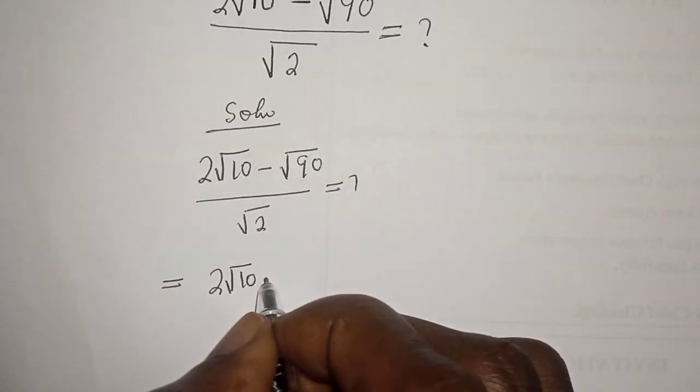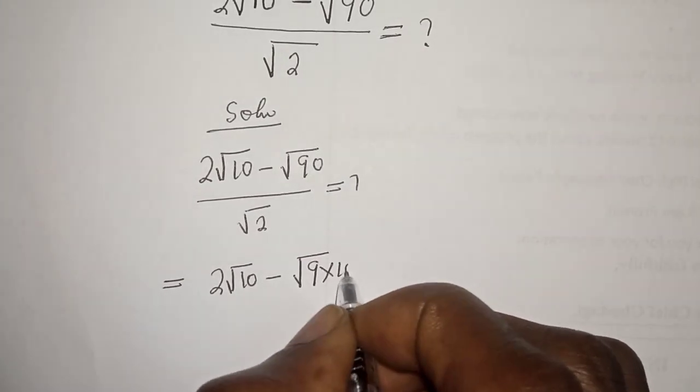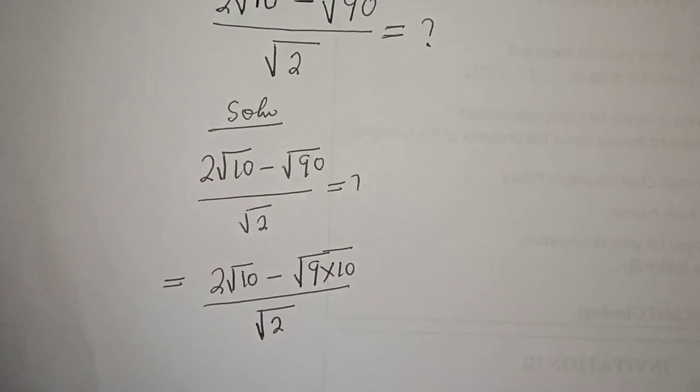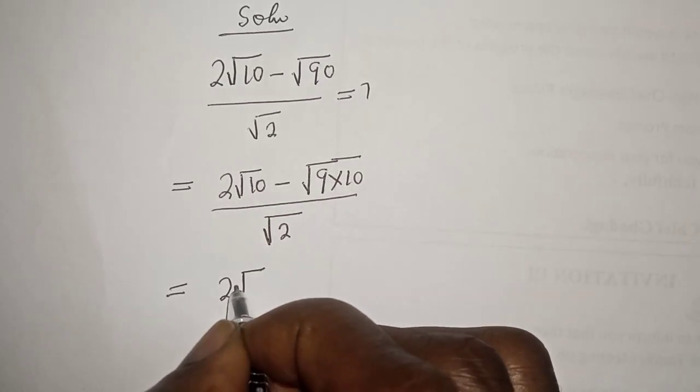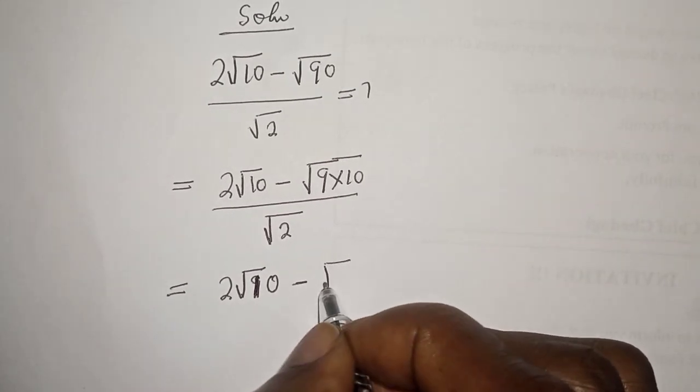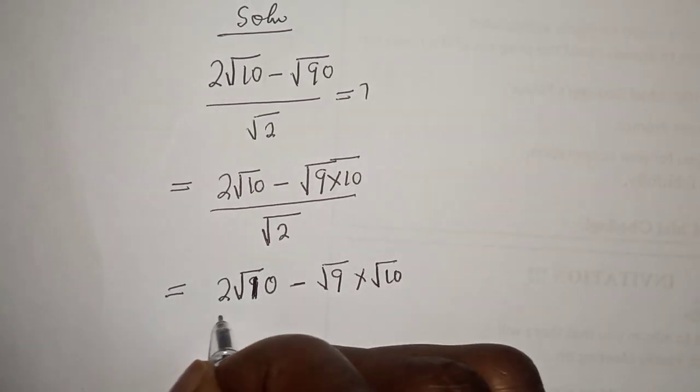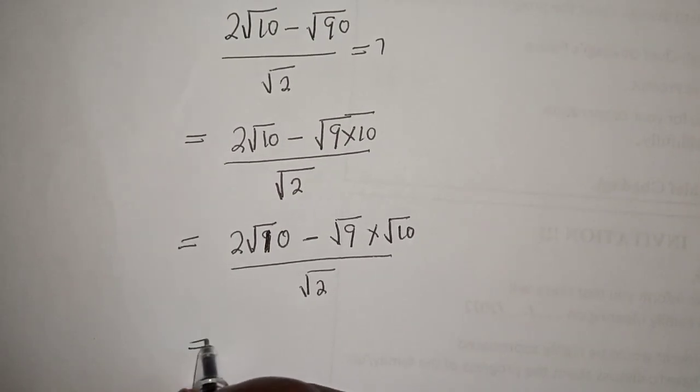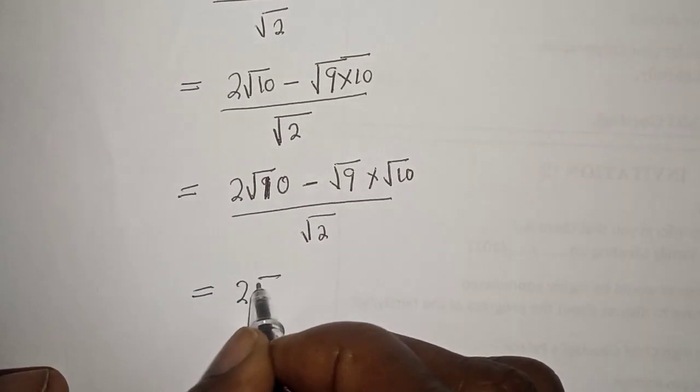2√10 minus √90 can be written as square root of 9 multiply by 10 over square root of 2, equals 2√10 minus √9 multiply by √10 over √2.